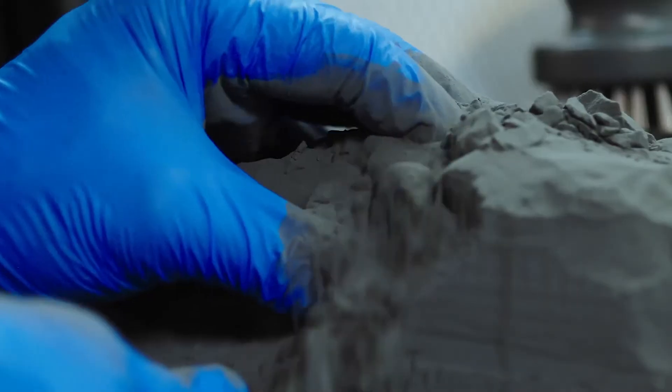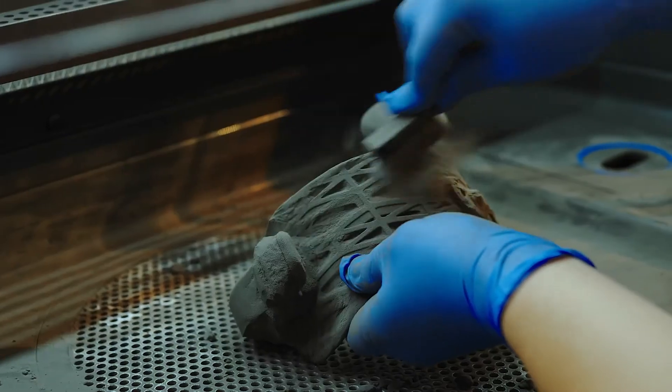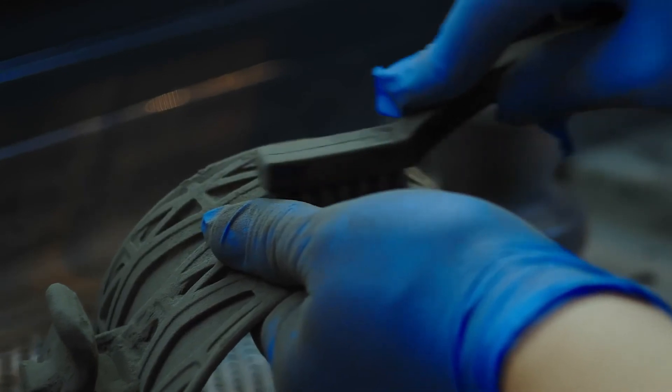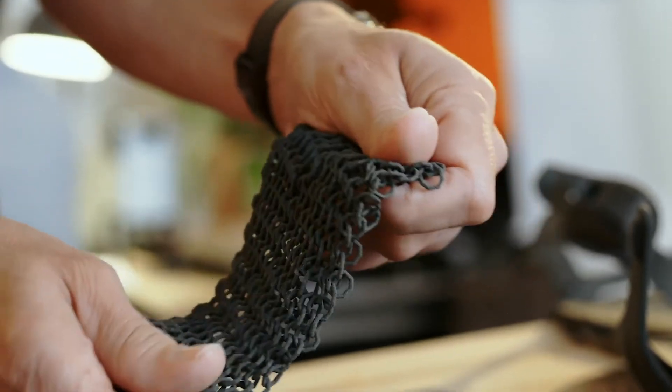SLS 3D printing fuses nylon powder layer by layer. The unused powder supports the parts during printing so you can create complex interconnecting designs with no need for support structures.